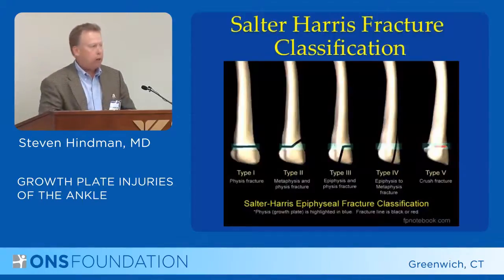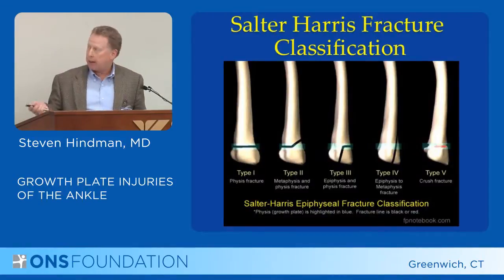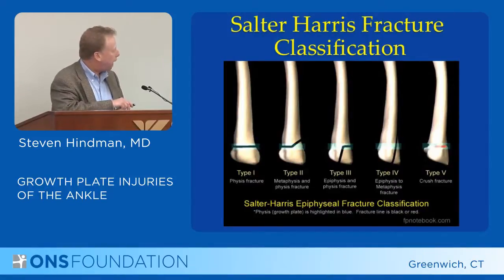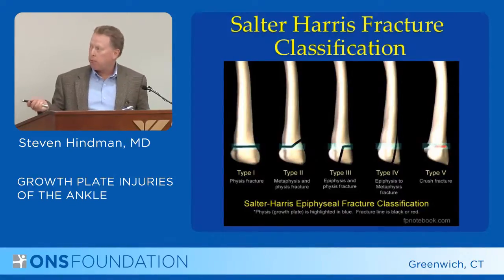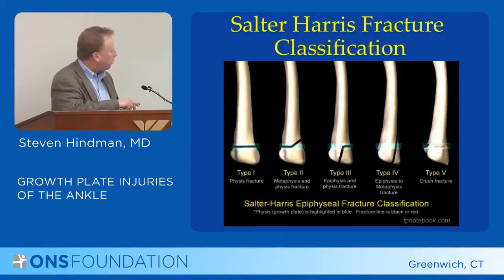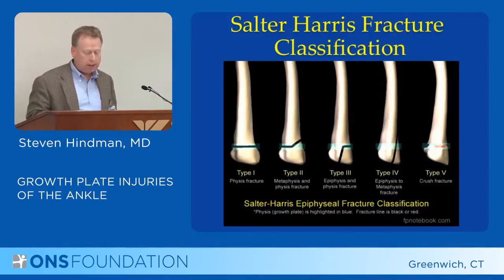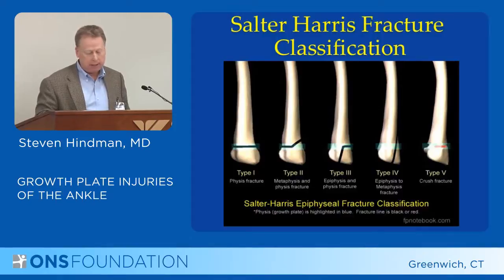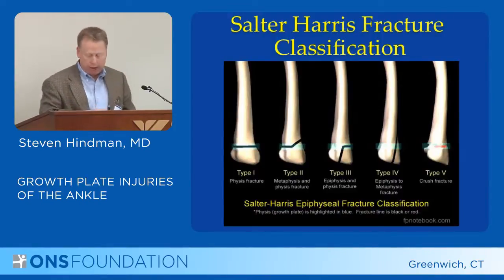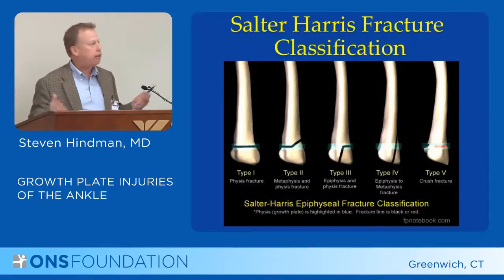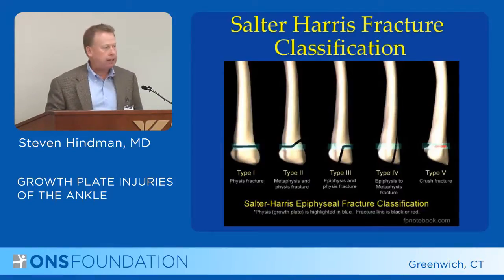We'll go over the Salter-Harris classification again quickly. The shaded area shows where the growth plate is, and the fracture types are: Salter-1 being just through the growth plate; Salter-2 through the growth plate and up through the metaphysis; Salter-3 through the epiphysis and the growth plate; Salter-4 crossing both epiphysis and metaphysis; and Salter-5, which is a very difficult fracture to appreciate. This is really the difference between the adolescent athlete and the growing athlete.